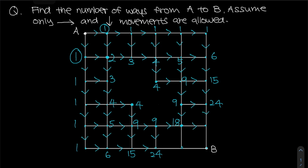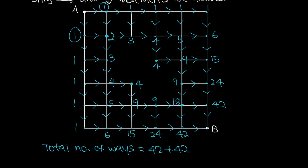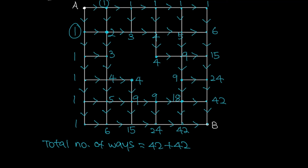From here, twenty-four plus eighteen equals forty-two ways leading into B from above, and forty-two ways leading into B from the side. Therefore, the total number of ways from A to B is simply forty-two plus forty-two, because B sees two arrows pointing to it. Forty-two plus forty-two gives you eighty-four, which is your answer.